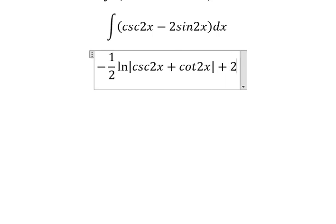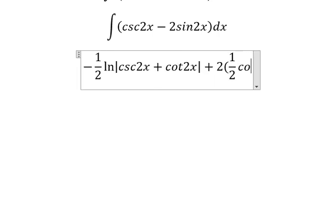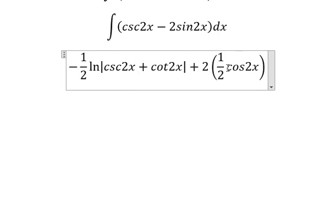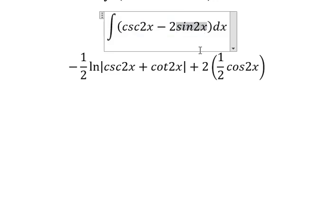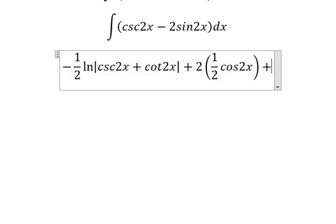We have positive 1 over 2 cosine 2x, because the integration of sine 2x gives negative 1 over 2 cosine 2x. Negative and negative gives positive, and we add C.